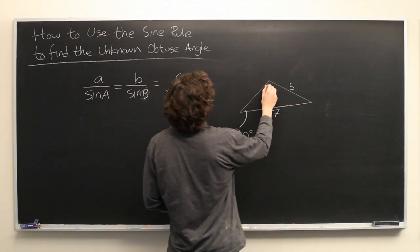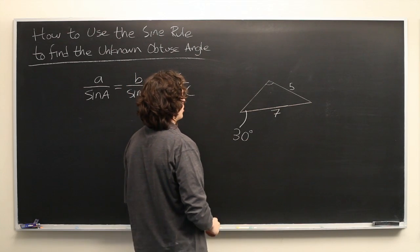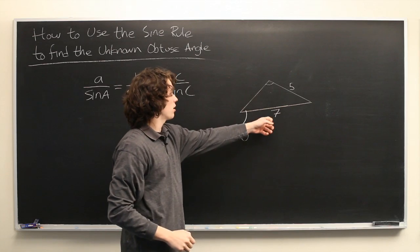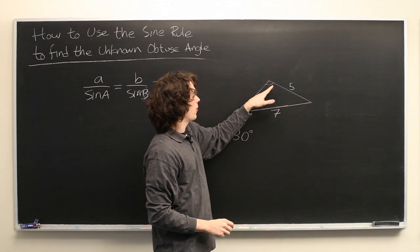So, we can use this to try to find out more information about this triangle here, where we could think of this as angle a and this as side a, and we can think of this as angle b and this as side b, and we know that this is obtuse.